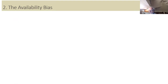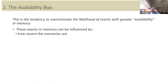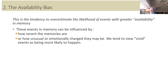Another one is called the availability bias — the tendency to overestimate the likelihood of events with greater availability in memory. Events in memory can be influenced by two things: one, how recent the memory is, so if something recently happened you're more likely to think it's likely to happen again; and two, how unusual or emotionally charged the memory is. We tend to view vivid events as being more likely to happen.